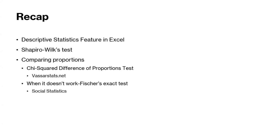We also talked about Shapiro-Wilk's test and how it's used for ordinal and continuous or scalar data when testing for data normality. If the p-value is greater than 0.05, your data set is considered normal and you would use parametric tests to compare your data sets between groups. If the p-value for the Shapiro-Wilk's test is less than 0.05, you would use non-parametric tests, because that indicates your data set is not normal.